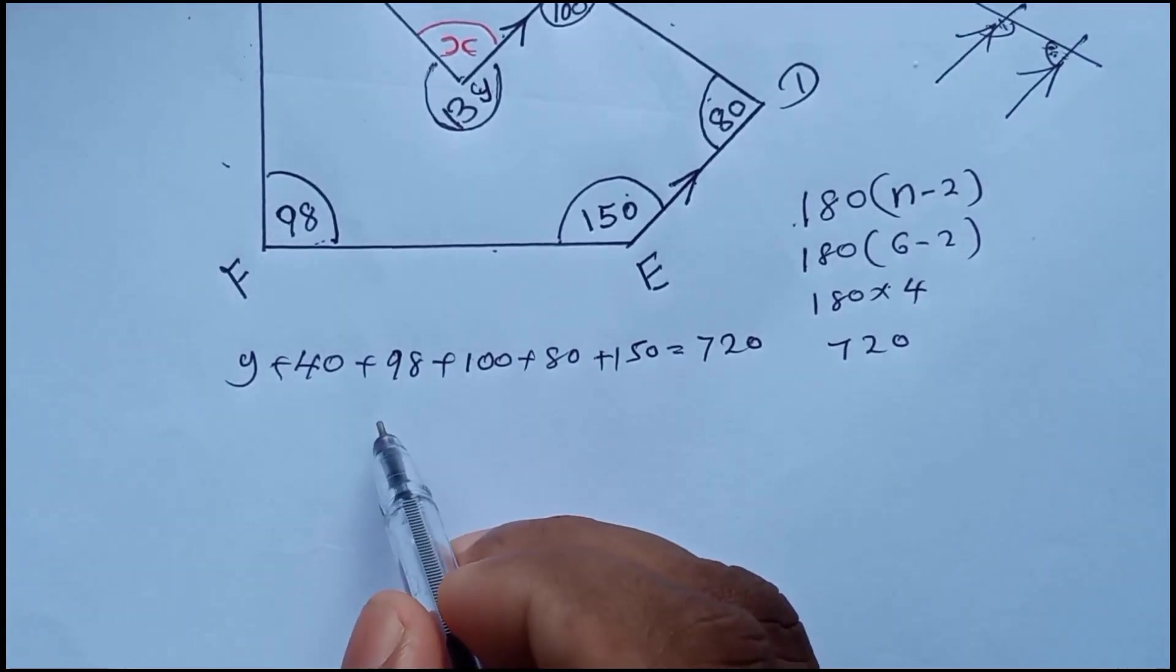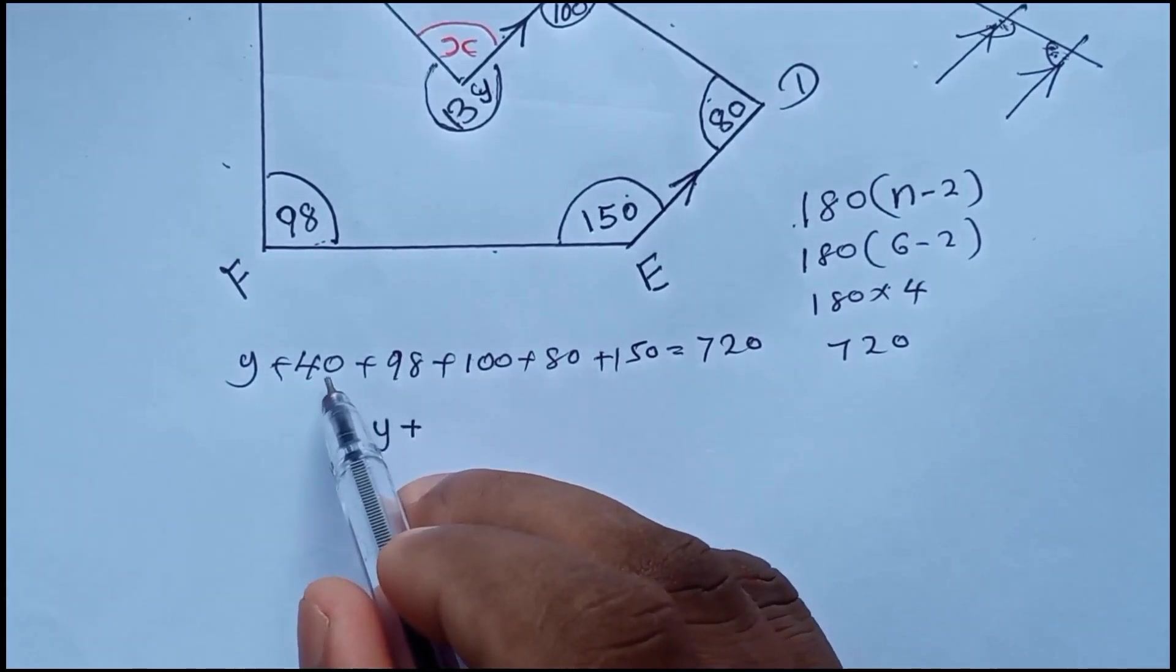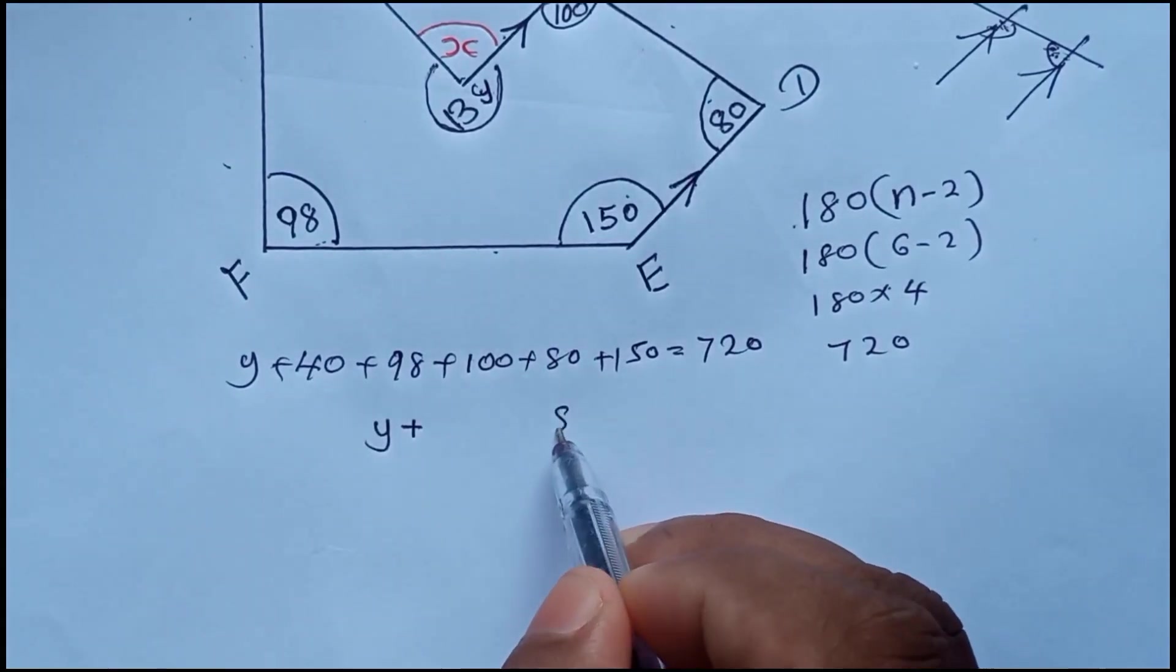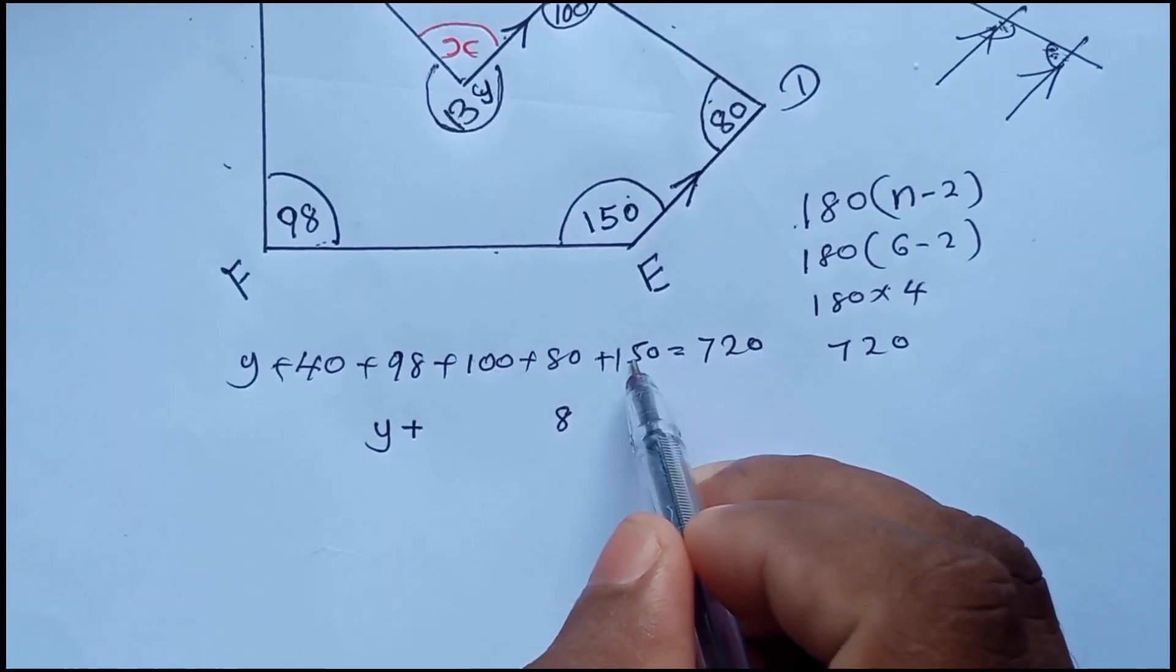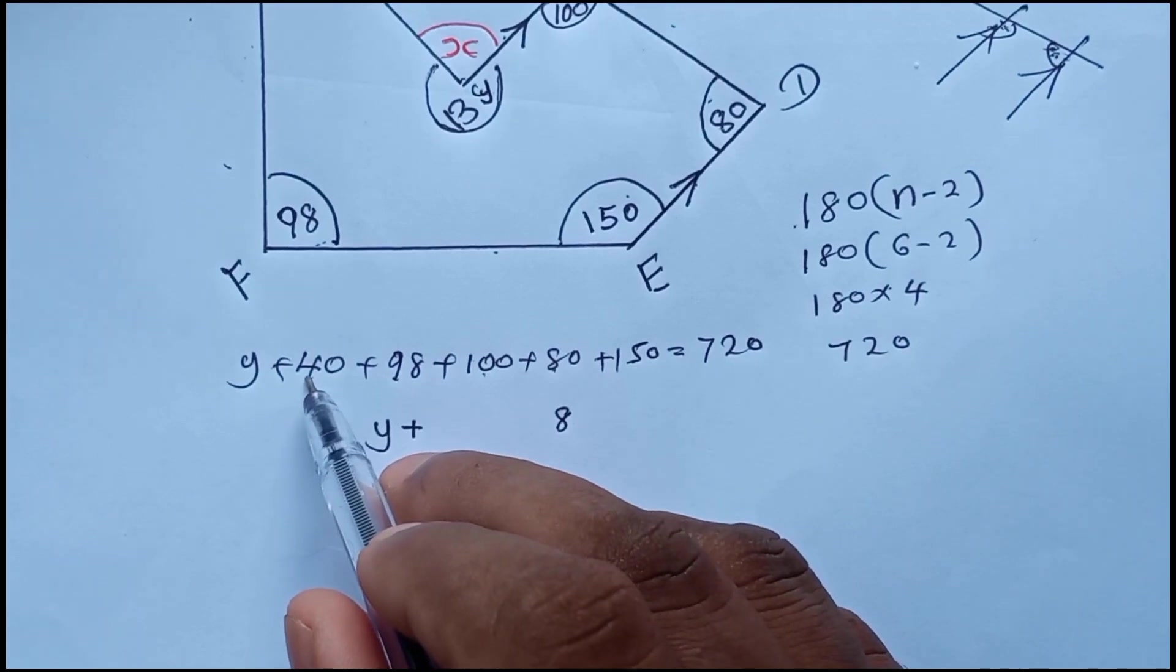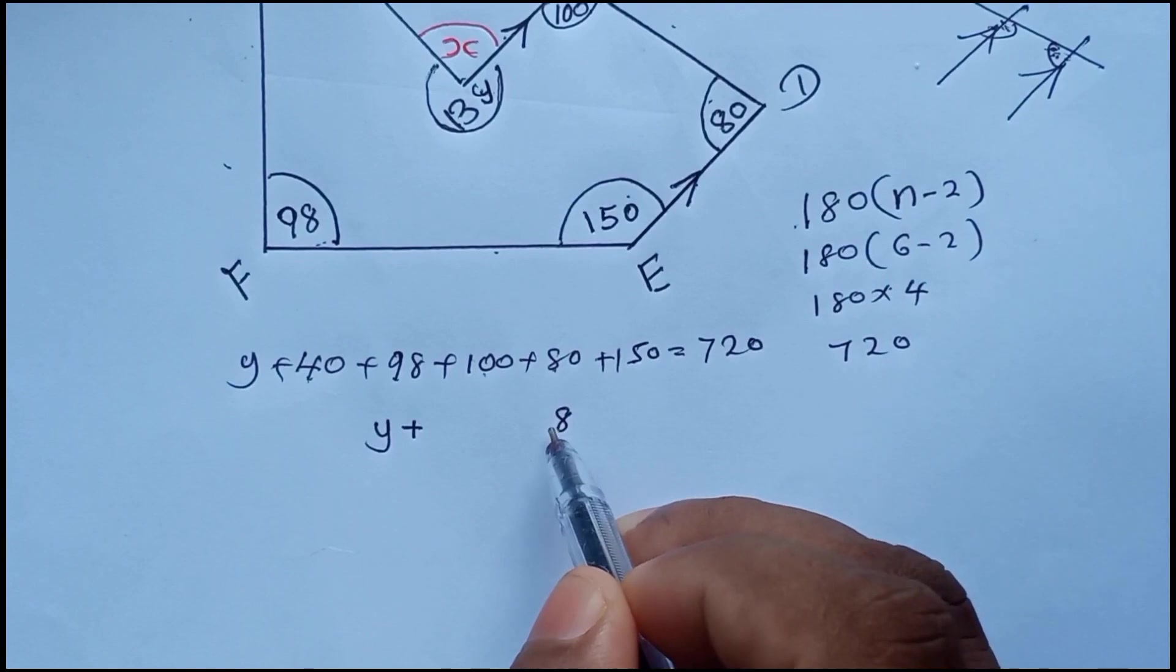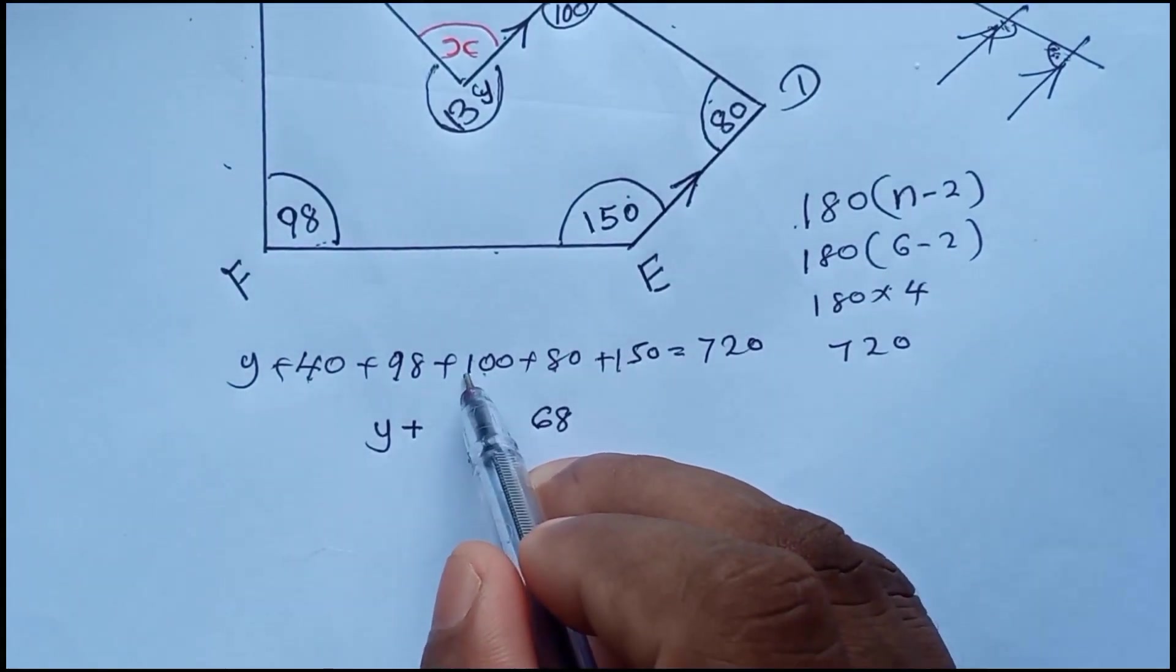Here will be y plus, let's add this all together. It will be 8 here, and then 5 plus 8 is 13, 13 plus 9 is 22, 22 plus 4 means 26. I will put 6 here to remain 2 plus this 3, 3 plus this 4.